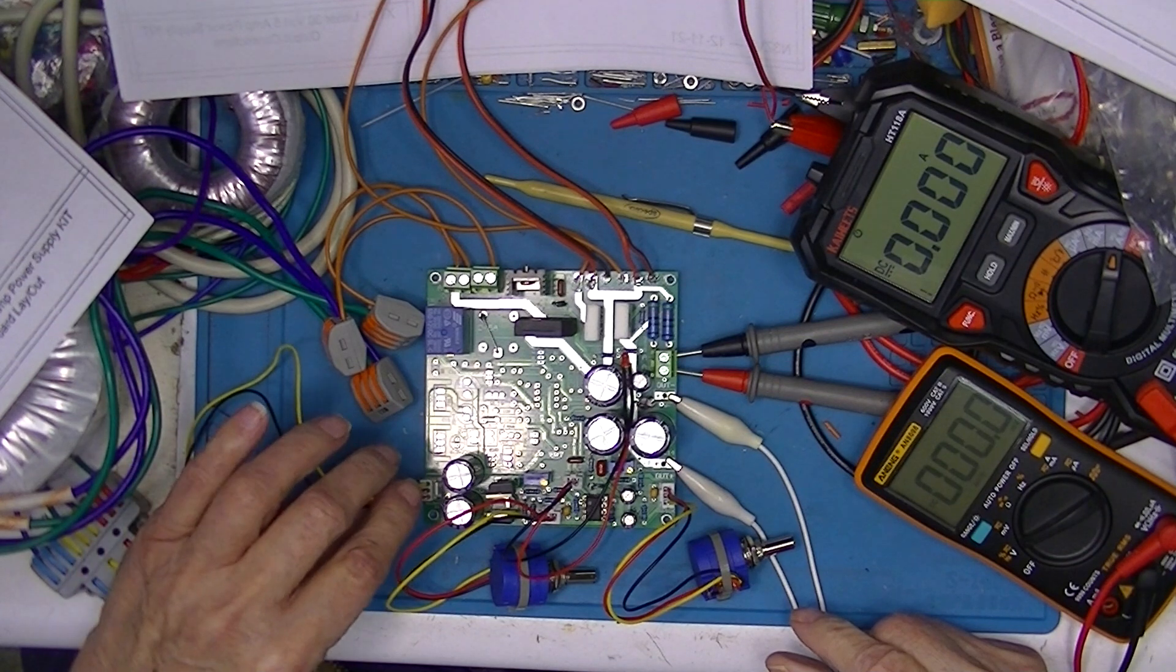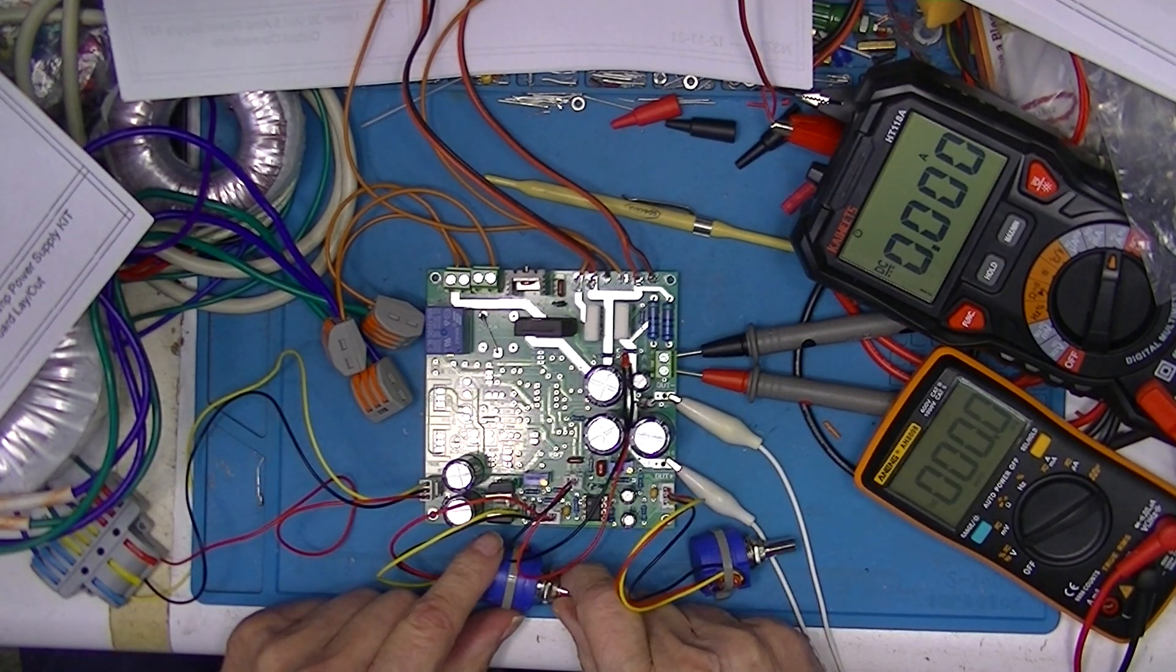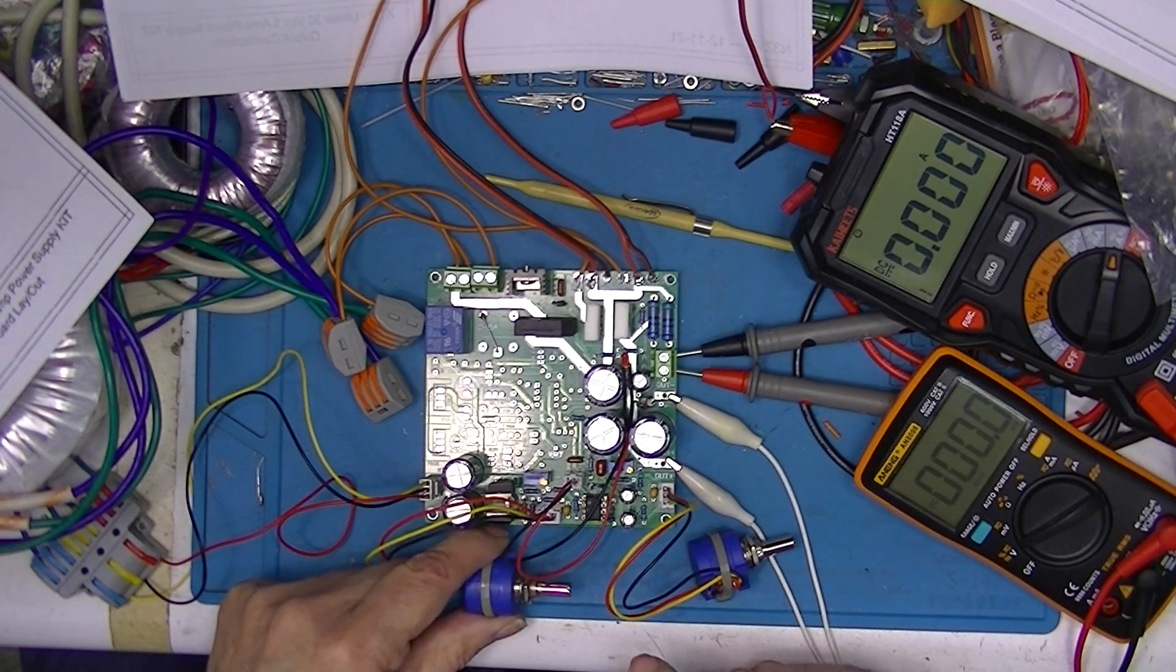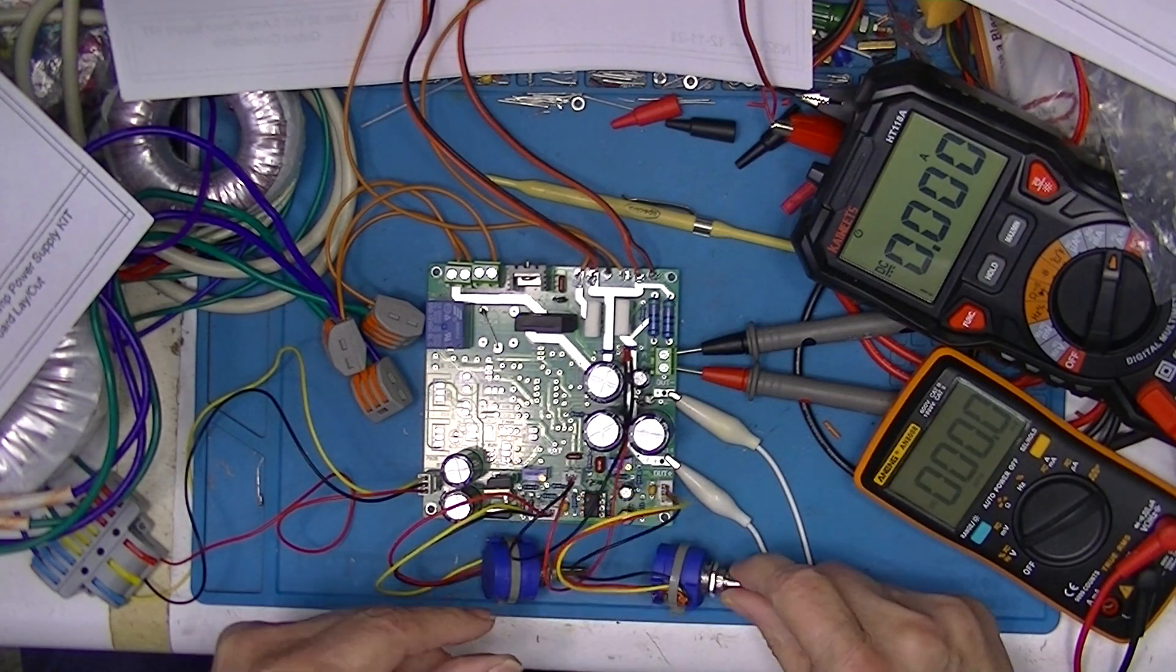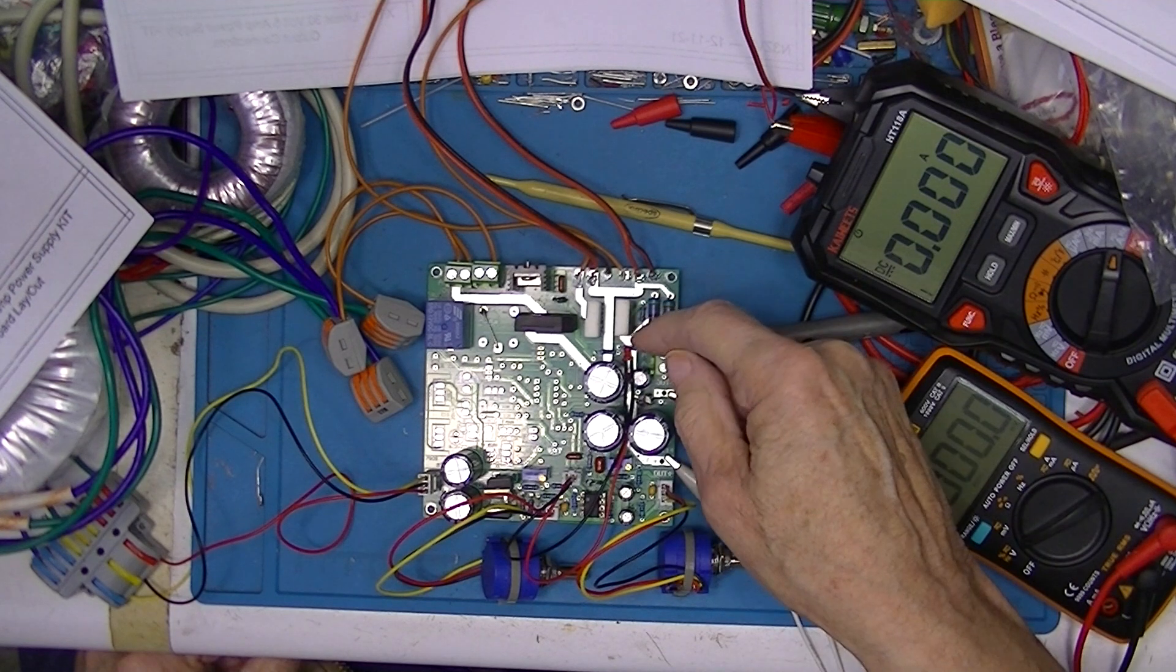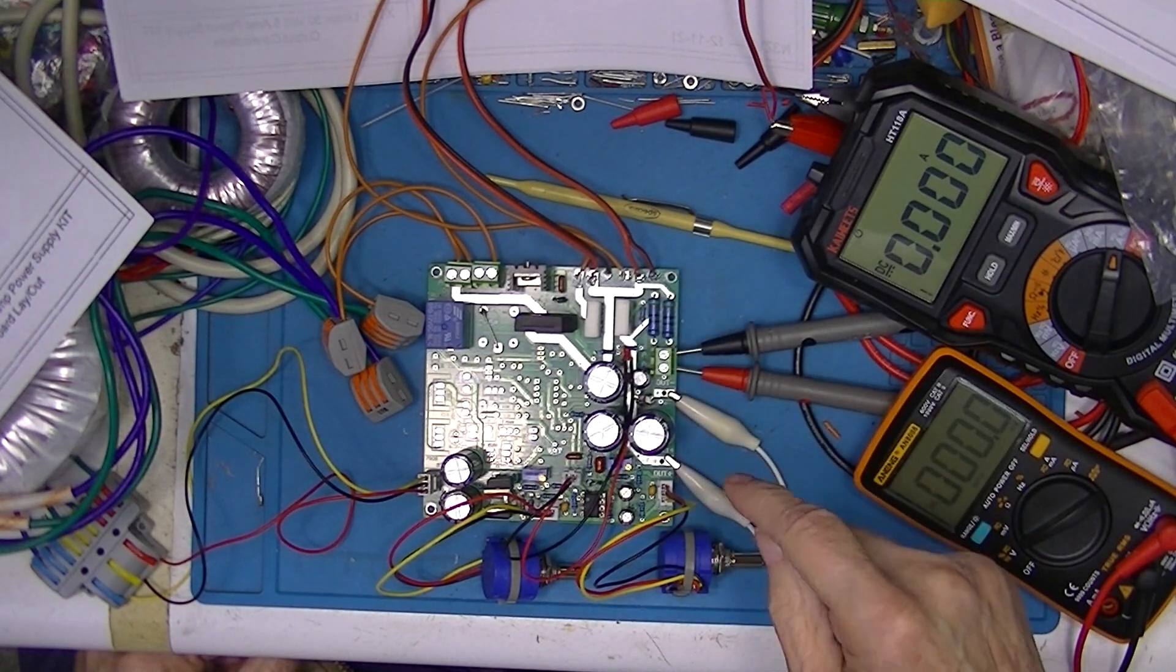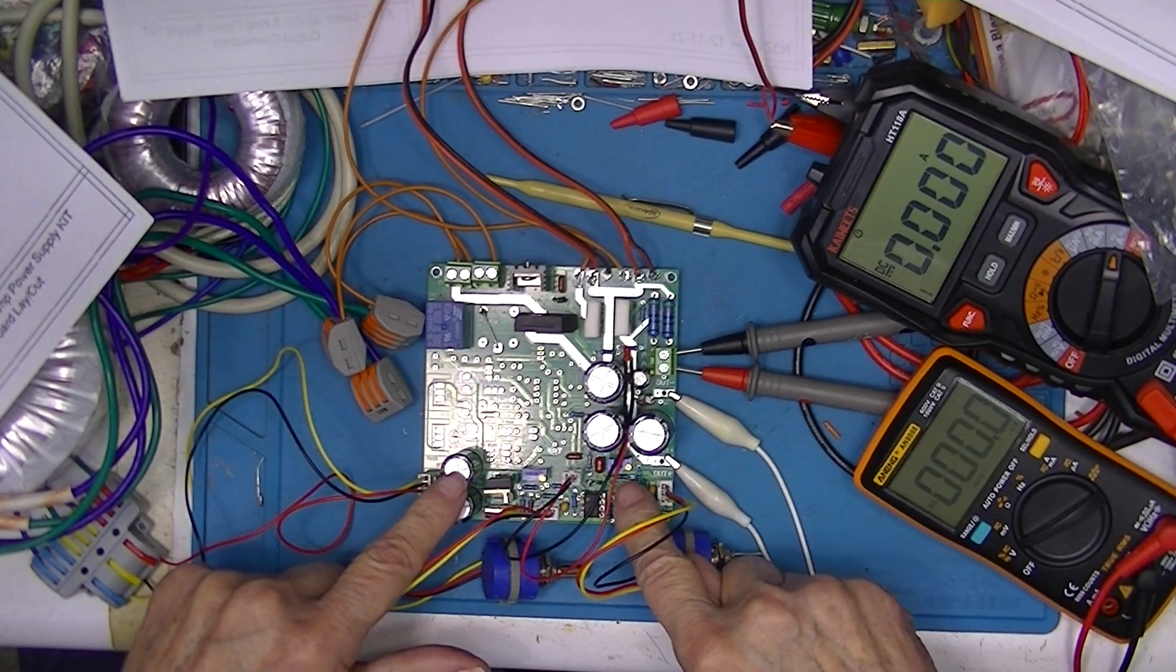This potentiometer sets the current limit, this one sets the output voltage, and this LED indicates that we're in the constant current mode.